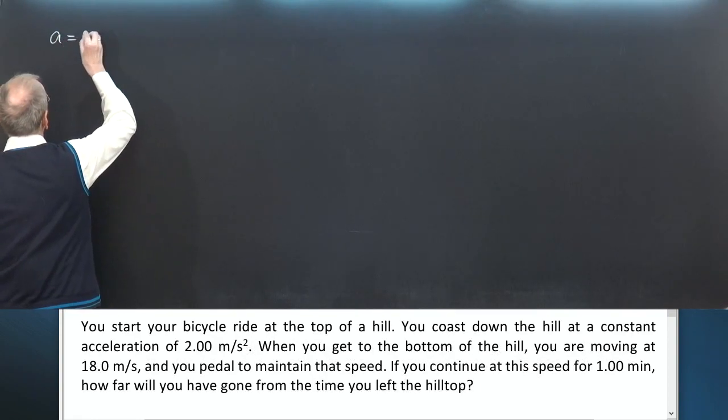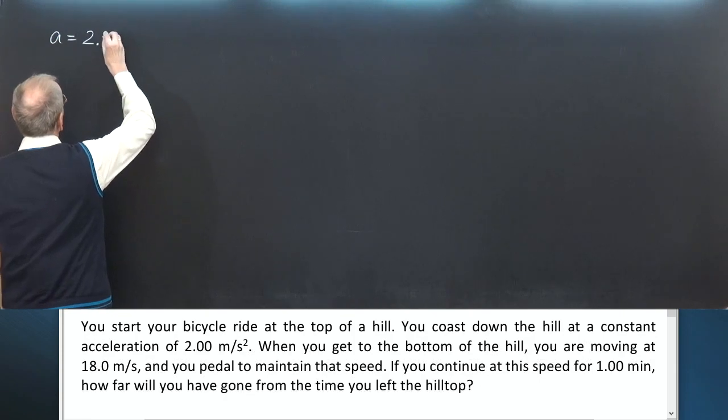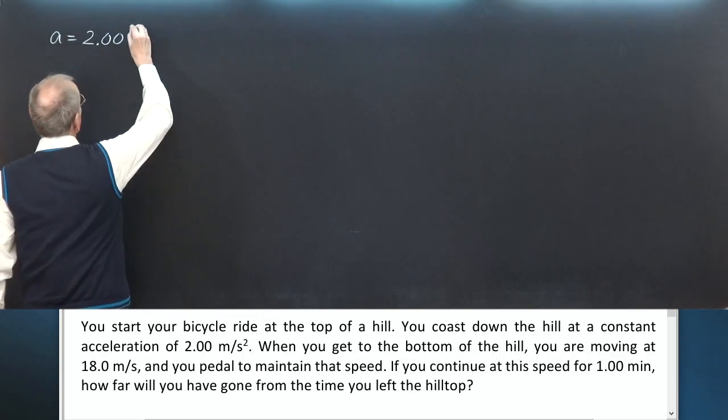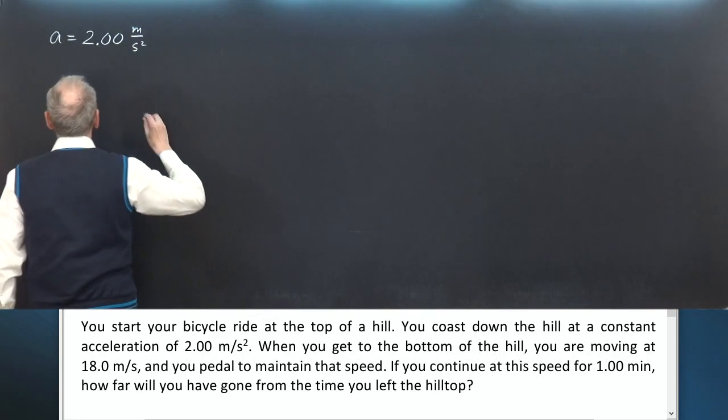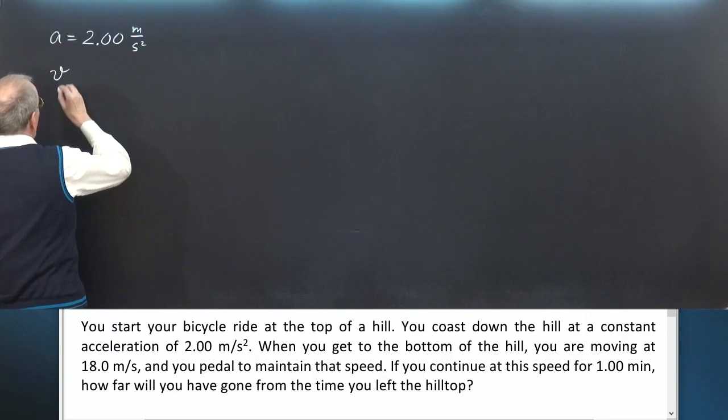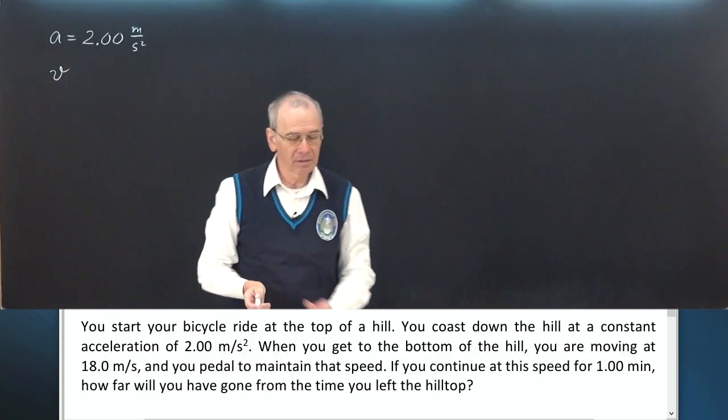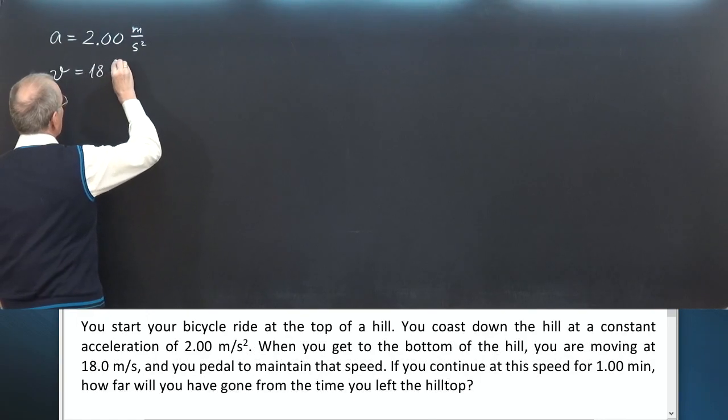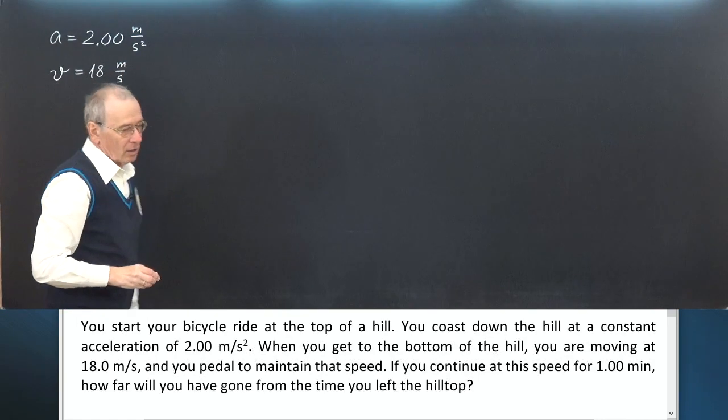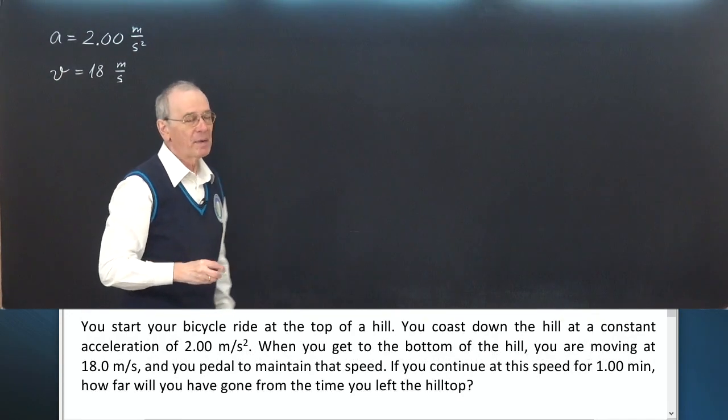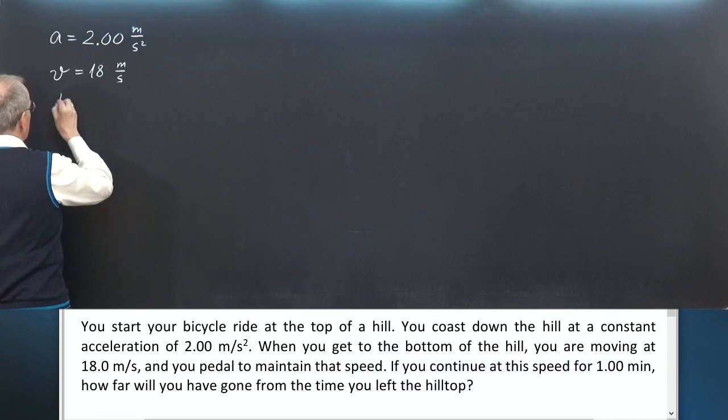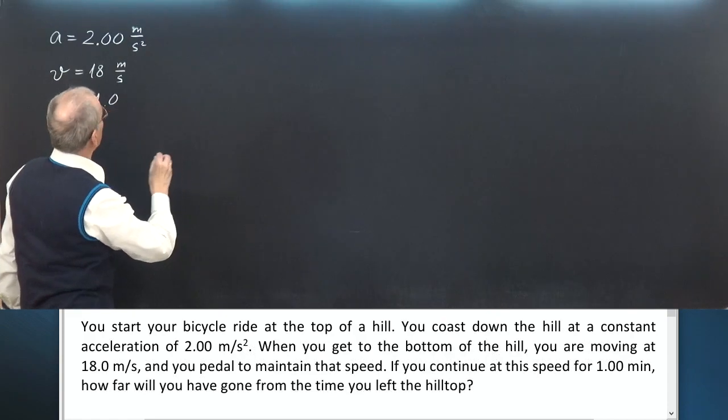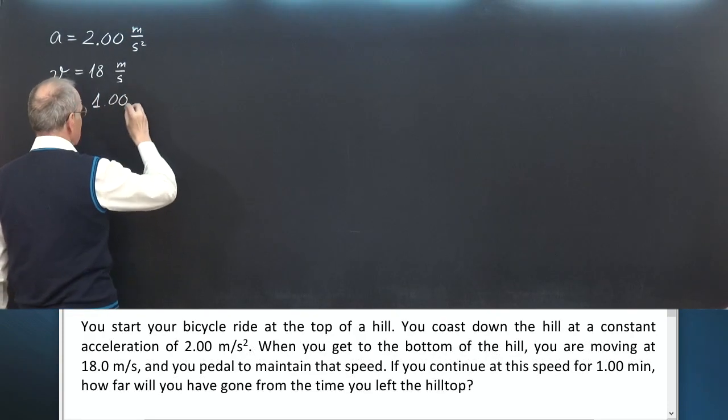A is your acceleration during your coasting down the hill, 2 meters per second squared. When you reach the bottom of the hill, your velocity is 18 meters per second. You pedal for one minute to maintain this speed. T equals one minute, to two significant digits.